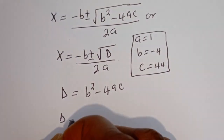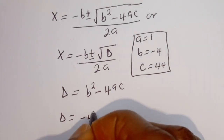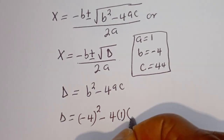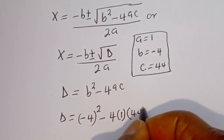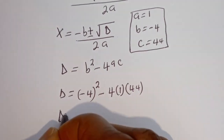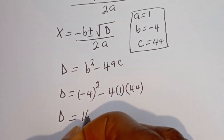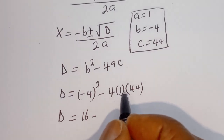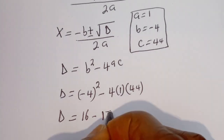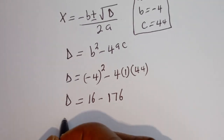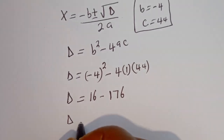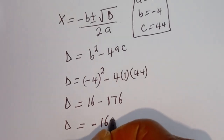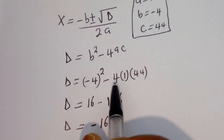Then the discriminant D is equal to b squared minus 4ac: that is (minus 4) squared minus 4 multiplied by 1 multiplied by 44. That gives 16 minus 176, which is minus 160.